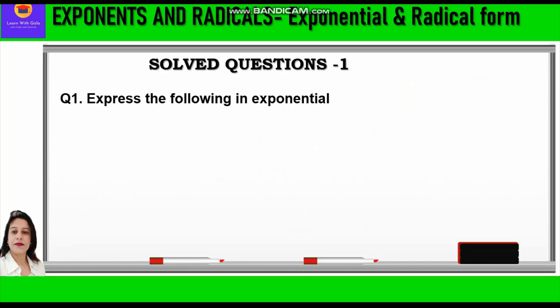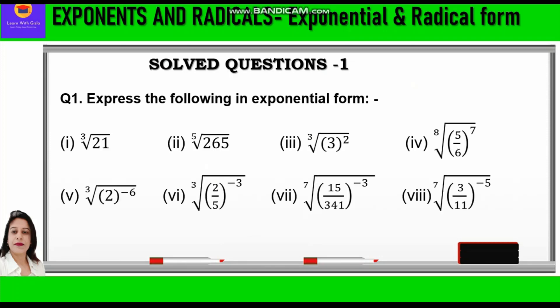Let's start with the first question: express the following in exponential form. The questions given to us, which we have to convert into exponential form, are in radical form — that means they are of the form nth root of a raised to power m. We have to convert into exponential form, which is a raised to power m upon n. That means m, which is the power, will come in the numerator and n, which is the root, will come in the denominator.